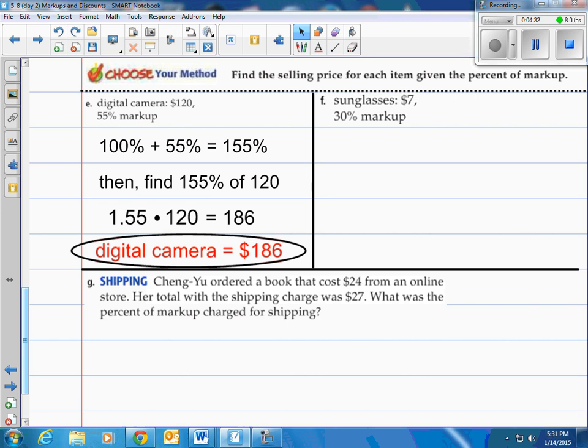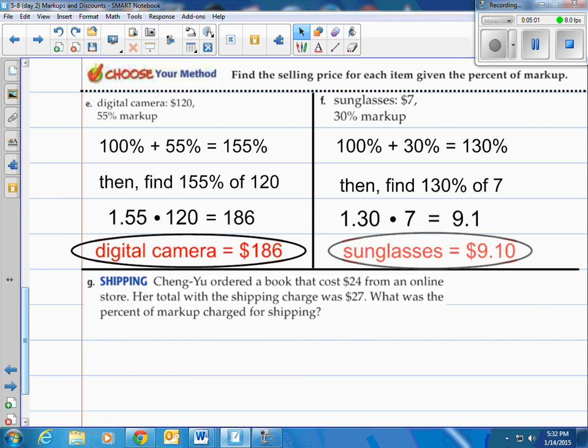How about F? Sunglasses are $7, they want to mark it up 30%, so 100% plus the 30% is 130%. We as the consumer will pay 130% actually, which is the wholesale amount plus the 30% markup that they want to add in. So what we need to do is find 130% of the $7 wholesale price. And we take 1.3 and we multiply that by 7, we get 9.1, which is $9.10. So the sunglasses, to you, when we look at that little tag, we'll say $9.10.